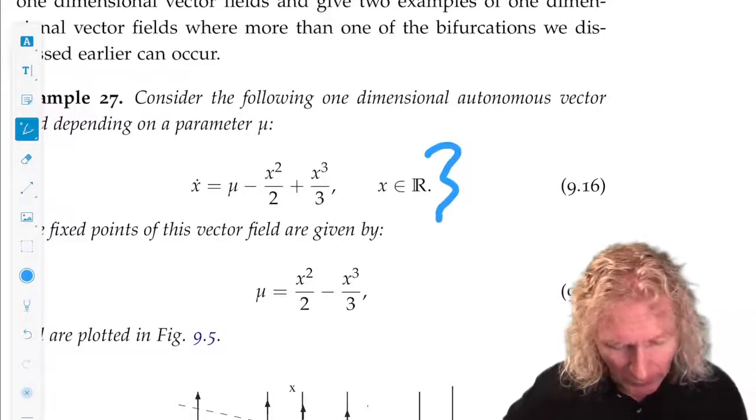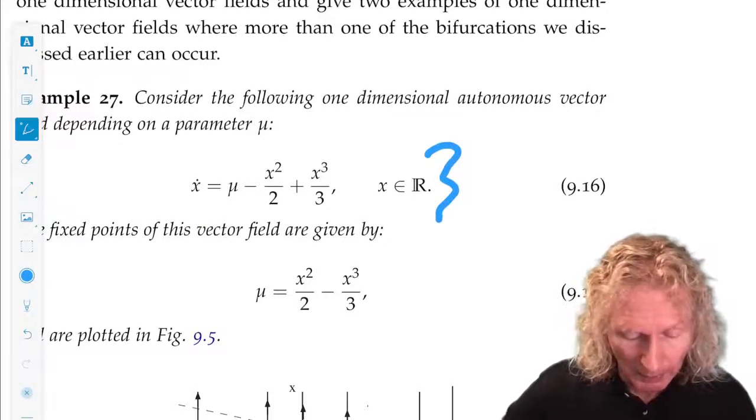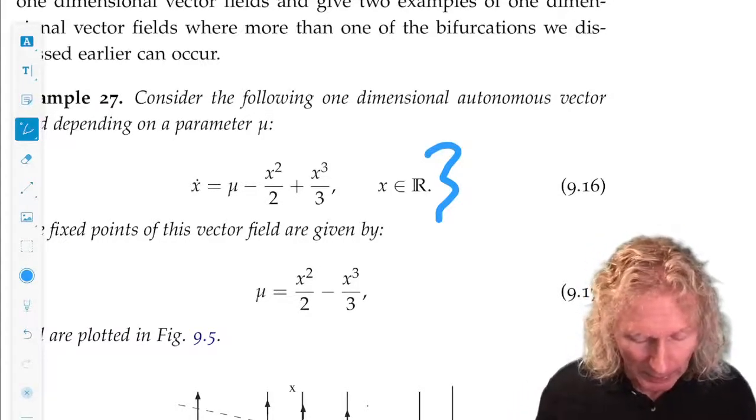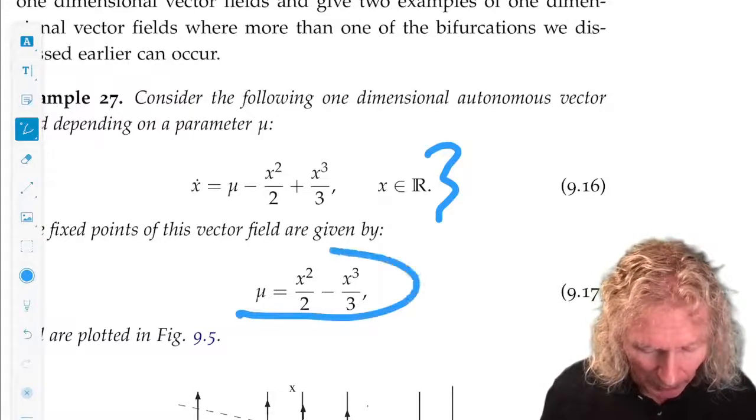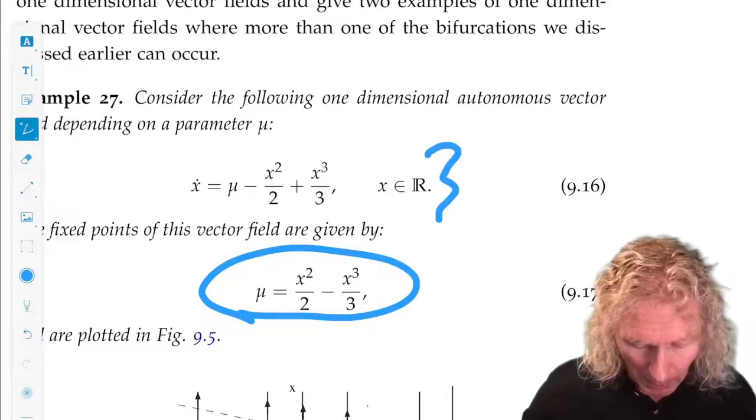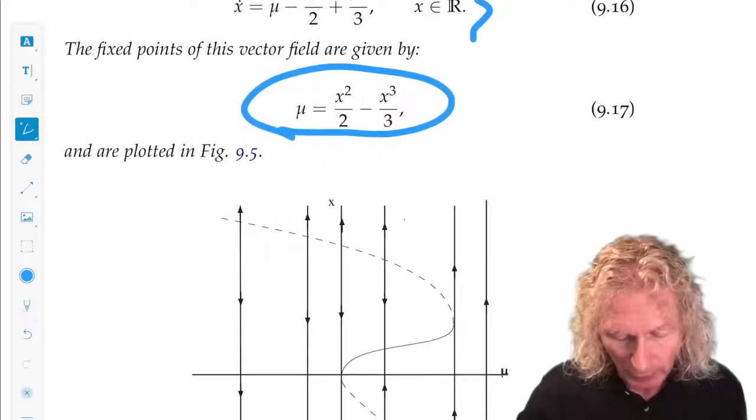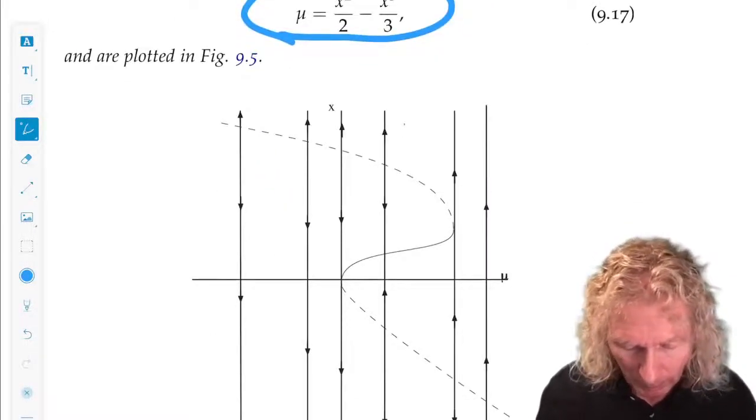First example: x dot is mu minus x squared over 2 plus x cubed over 3. We can easily find the fixed points of this and plot them. That's this cubic or s-shaped curve in this figure.